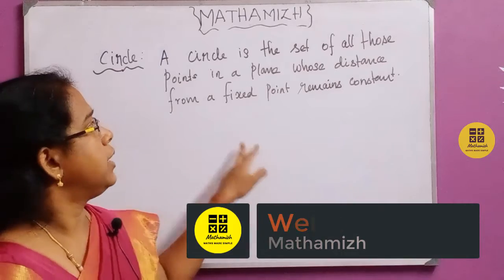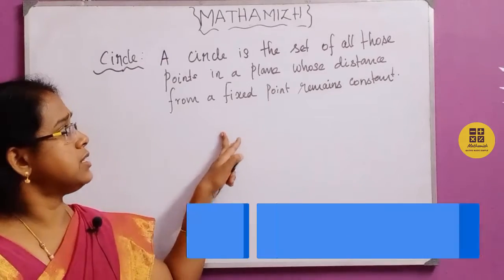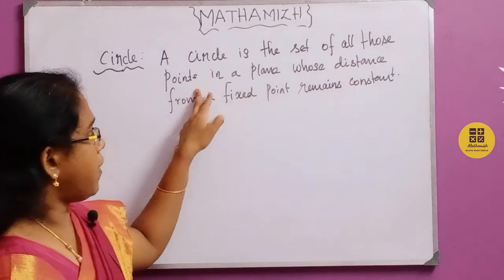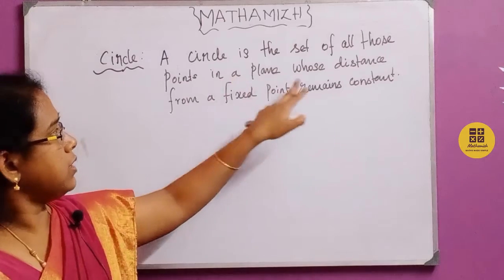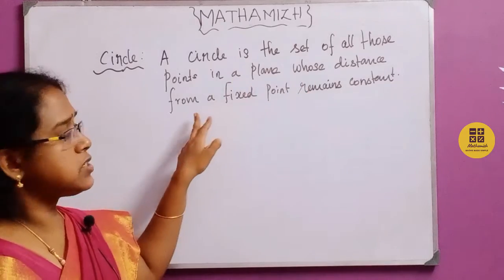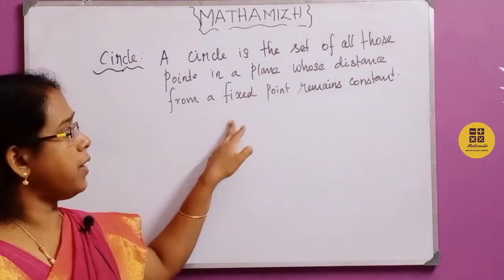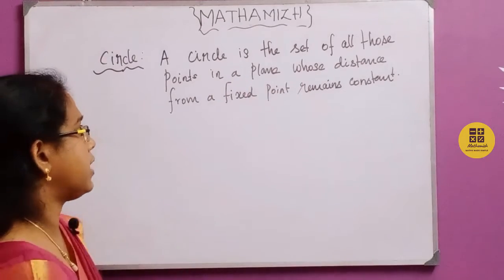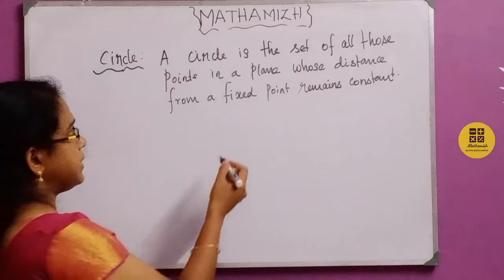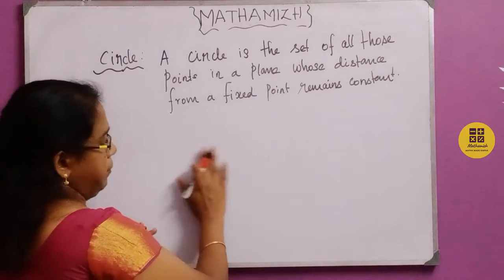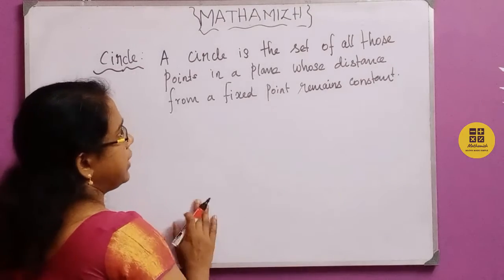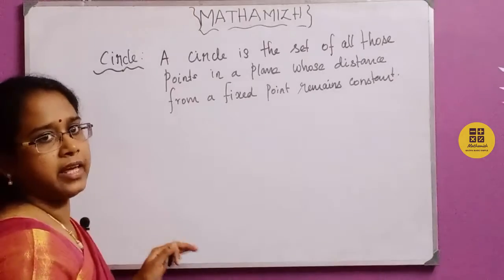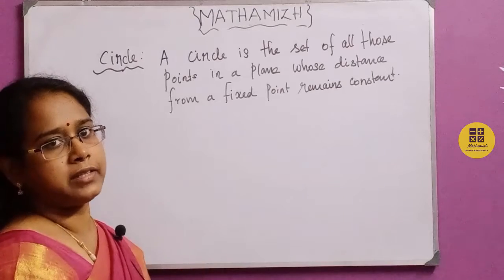The circle is a set of all those points in a plane whose distance from a fixed point remains constant. If we take a plane, we can see a real life example.